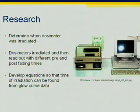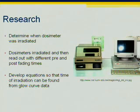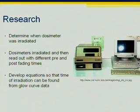Since TLDs have a constant rate of background absorption and post-irradiation fading, a glow curve will contain some information about the time of irradiation. Our research is focused on finding equations that can find the time of irradiation given a glow curve as input. This is done by exposing the dosimeters to a radiation source and using different pre- and post-fading conditions. We would then generate a large set of data points using 100 TLDs with different amounts of pre- and post-fading that could then be generalized into equations.